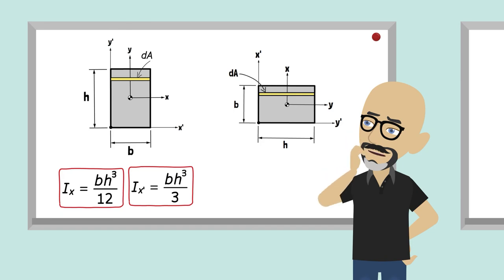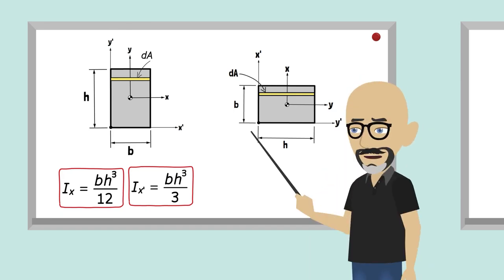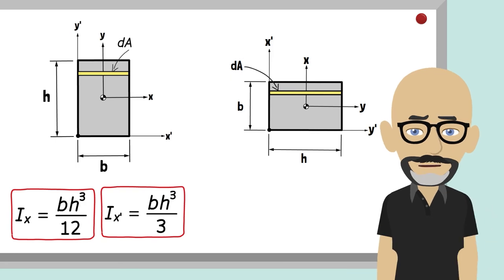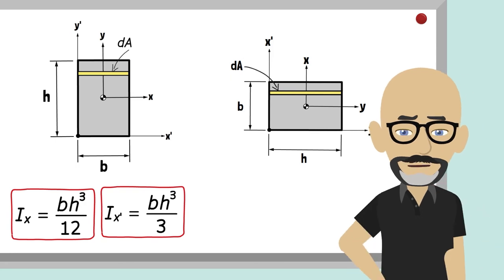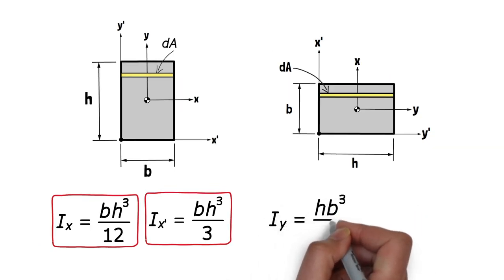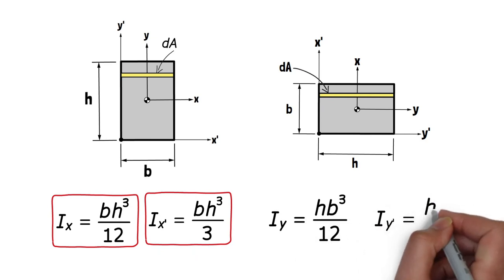Now compare that to your previous solution for Ix and Ix prime. Comparing to my previous solution and... oh, well, both shapes are rectangular. There is just a swap in the dimensions and axes. So I can infer that Iy and Iy prime for the image on the right would be equivalent to Ix and Ix prime for the image on the left, with the width and the height dimensions swapped. Iy would then be equal to h times b cubed over 12, and Iy prime would be equal to h times b cubed over 3.